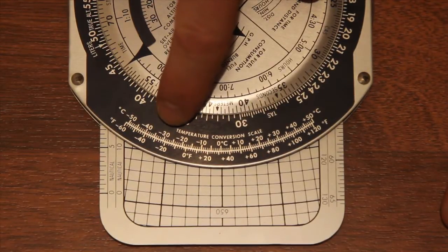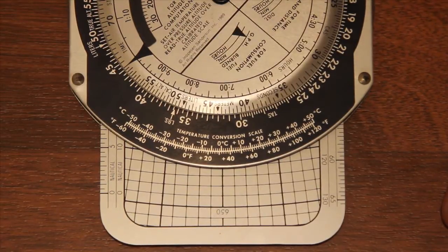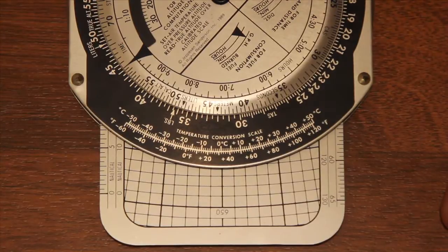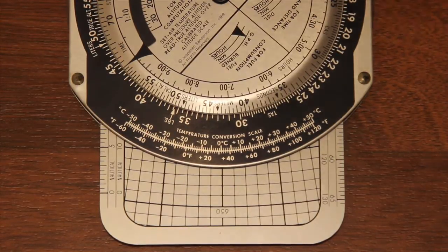You can see minus 30 degrees Celsius is minus 22 degrees Fahrenheit. So that's a really simple way to get those calculations very quickly.